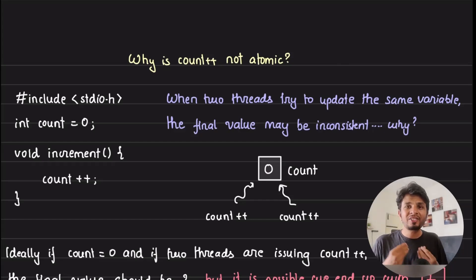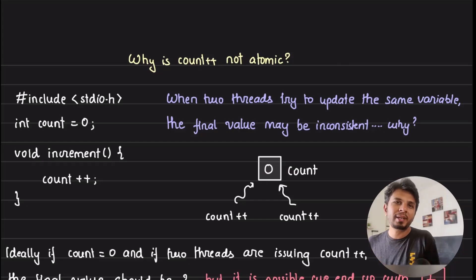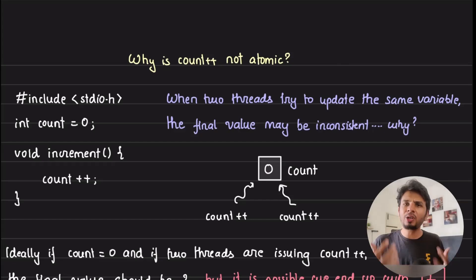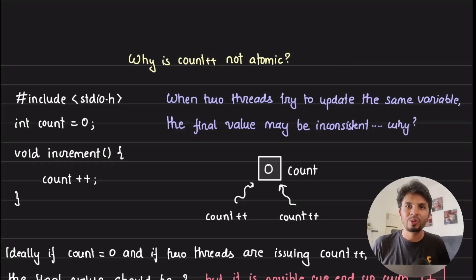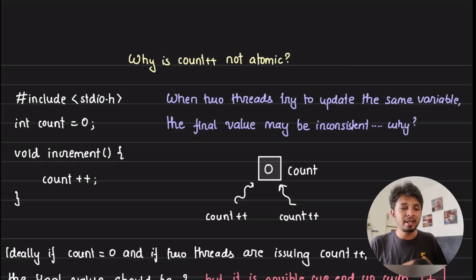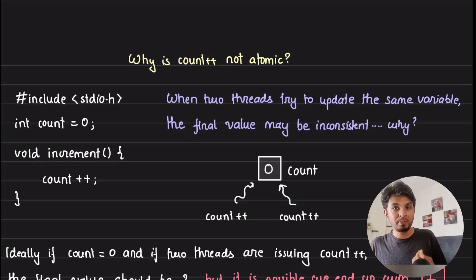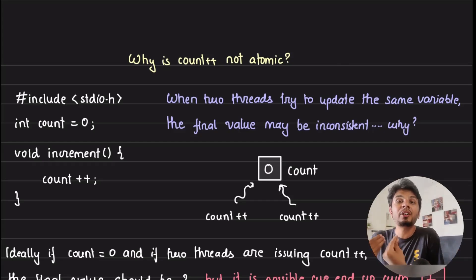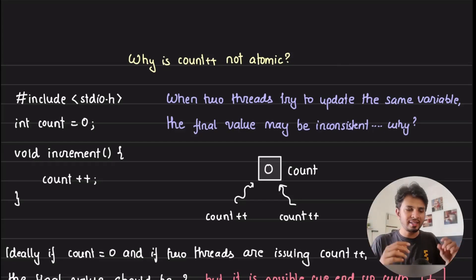When two threads try to update the same variable, the final value may go into an inconsistent state. We all know this, but why does that happen? In this video we'll go deep and understand why a really simple operation like count++ is not atomic in nature and why it is not thread safe.